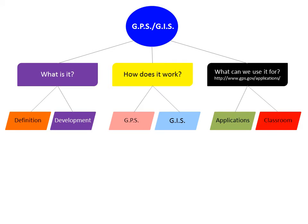My first set of subtopics begin under 'What is it?' with Definition and Development. For Definition I chose orange because I felt like it popped and it's something you need to remember to understand. For Development I chose purple again for the same reasoning — it's history and it just reminds me of royalty and learning history.